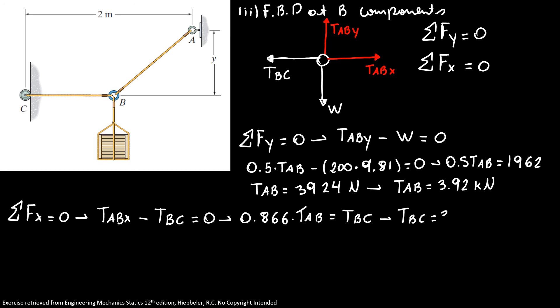So I know my tension BC equals 3.924 newtons times 0.866. So I have my tension BC equals 3.396 newtons.